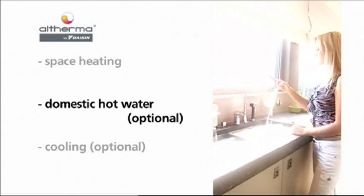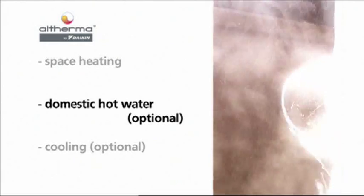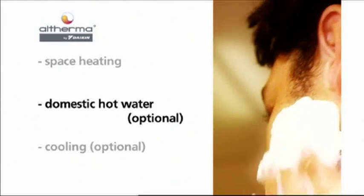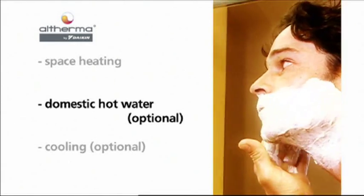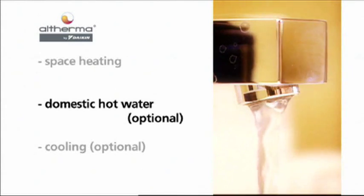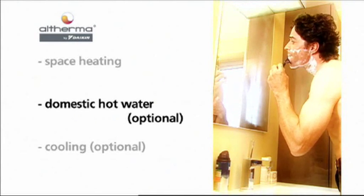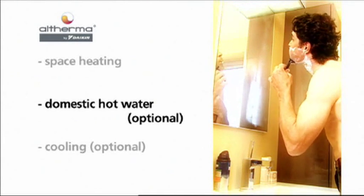When Altherma detects a demand for domestic hot water, it switches automatically from the space heating mode to the domestic hot water preparation mode. The HydroBox directs the heat from the water circuit for space heating to the domestic hot water tank in order to heat the water up to 50 degrees Celsius.